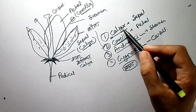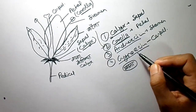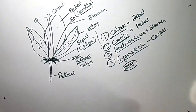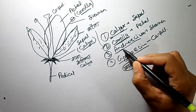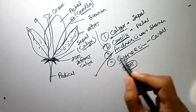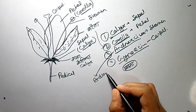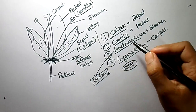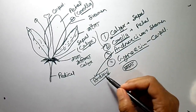So the first one is Calyx, second is Corolla — we can memorize it as 'Kerala.' Now, how can we memorize Androsium? Androsium is a male part. We can memorize it by the name Andrew — A-N-D-R-E-W. Andrew is a male name, so by Andrew we can memorize that Androsium is the male part.